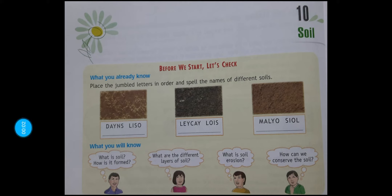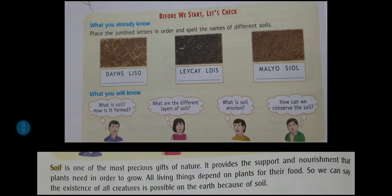Good morning children. Today in EBS we are going to start a new chapter — Listen 10: Soil. When you hear the word 'soil', many pictures come to your mind, like mud, clay, sand. Today in this chapter we are going to discuss what soil is, its formation, the different layers of soil, what is soil erosion, and how we can conserve the soil for growing crops.